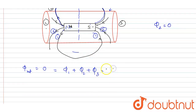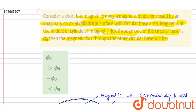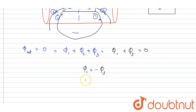Since φ₂ = 0, we get φ₁ + φ₃ = 0. It is given that the flux through one circular face is φ₀. So if φ₃ = φ₀, then φ₁ = -φ₀. The two circular faces have equal and opposite flux, meaning the flux through the other circular base is -φ₀.